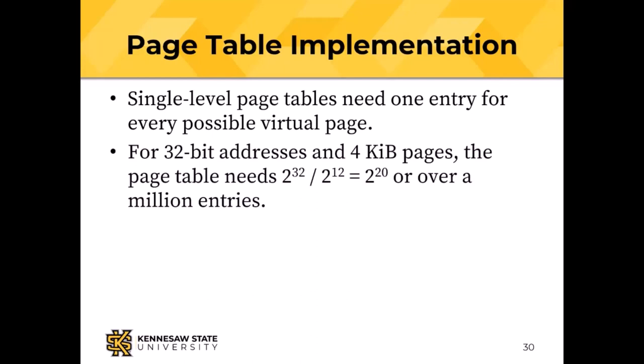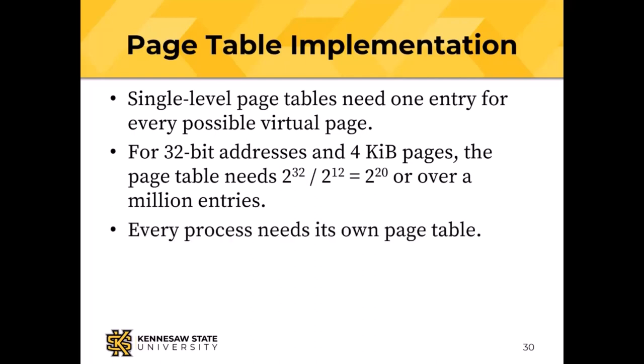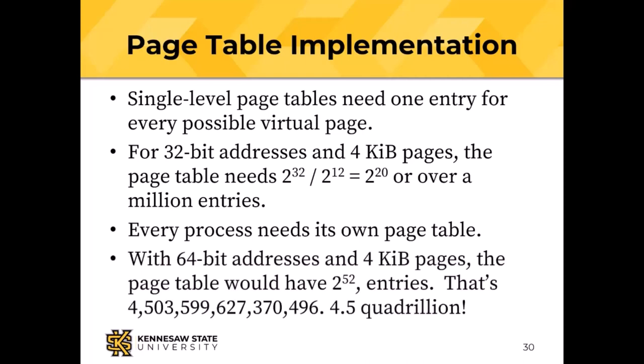For 64-bit addresses and 4 kibibyte pages, I need a 2 to the 20th entry page table. With 4 to 8 bytes per entry, that's about 8 megabytes for the page table — not very much in modern computers. But every process needs its own page table, and now it starts getting big. With 64-bit addresses, the page table would need 2 to the 52nd power entries — four and a half quadrillion entries. There is no room in memory for a page table that size.